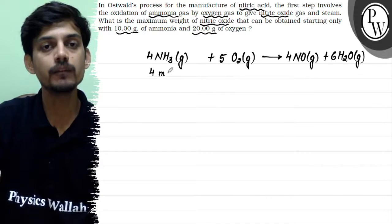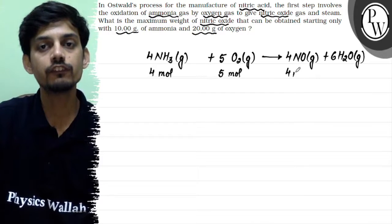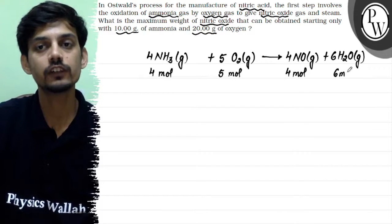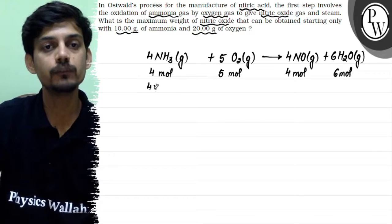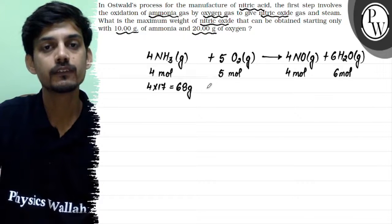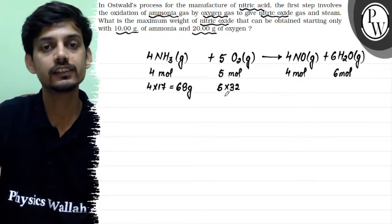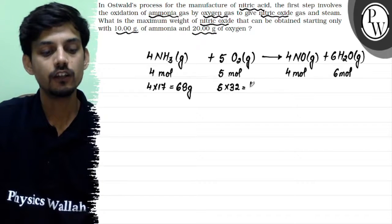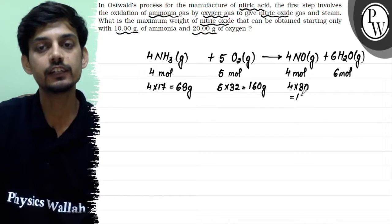4 moles of ammonia will react with 5 moles of oxygen to produce 4 moles of nitric oxide and 6 moles of water or steam. Converting to mass: 4 times molar mass of ammonia, which is 17, gives 68 grams. 5 times molar mass of oxygen, which is 32, gives 160 grams. 4 times molar mass of nitric oxide, which is 30, gives 120 grams.